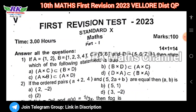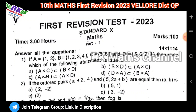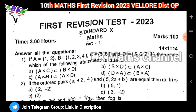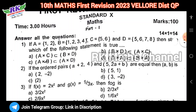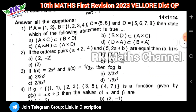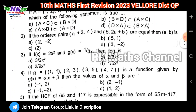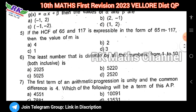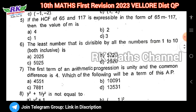This is the First Division Exam covering 4 units that are useful for this question paper. Total 100 marks. First, 14 bits — all 4 units are covered in the bits section.